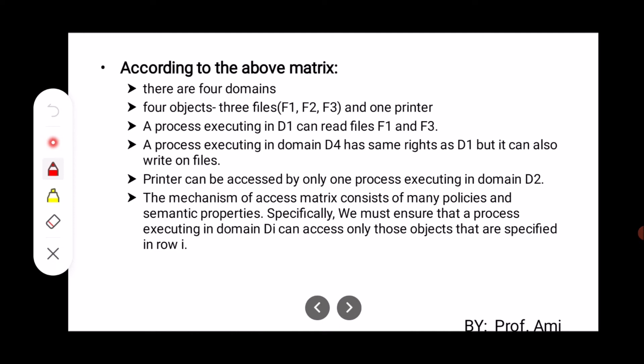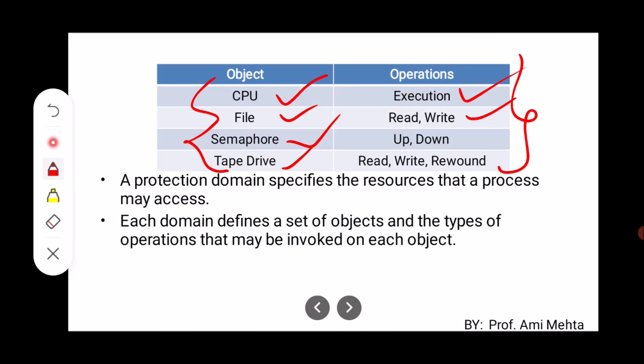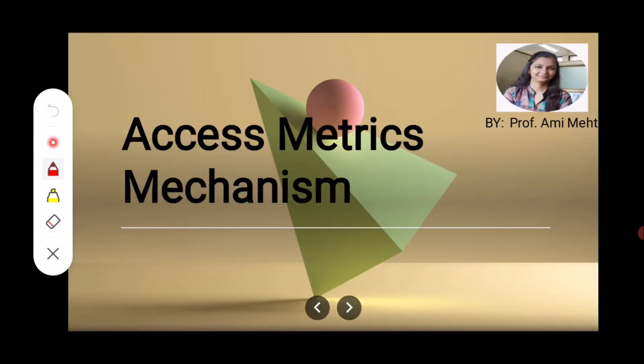According to the above matrix, there are four domains D1, D2, D3, D4, and four objects — three files F1, F2, F3 and one printer. A process executing in D1 can read files F1 and F3. A process executing in domain D4 has the same rights as D1 but can also write on files. The printer can be accessed only by a process executing in domain D2. We must ensure that a process executing in domain Di can access only those objects specified in row i.